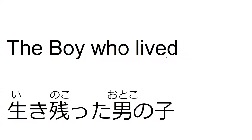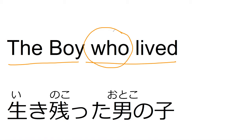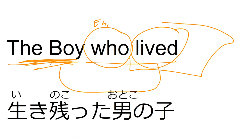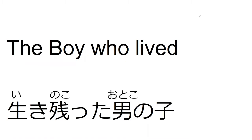A really common example of a relative clause in English is 'the boy who lived' from Harry Potter. 'Who' is how we mark relative clauses in English — it means that this little clause is going to be used to describe a noun. In Japanese, we mark our relative clauses a little bit differently.